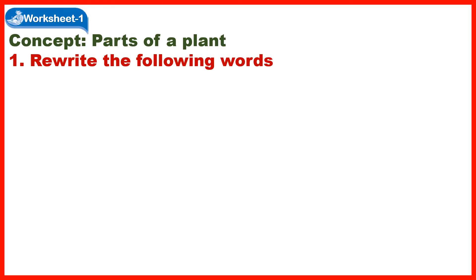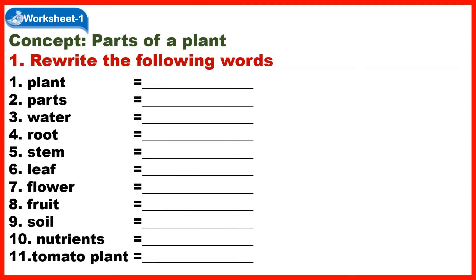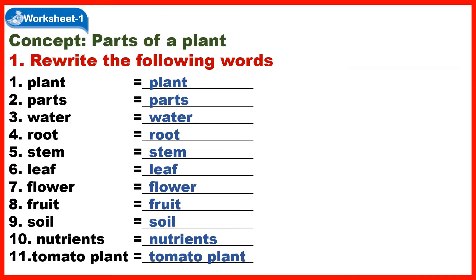Worksheet 1 Concept: Parts of a Plant. Section 1 – Rewrite the following words: Plant Parts, Water, Root, Stem, Leaf, Flower, Fruit, Soil, Nutrients.